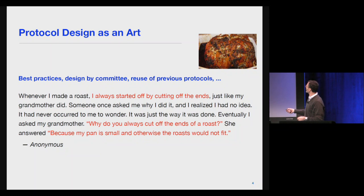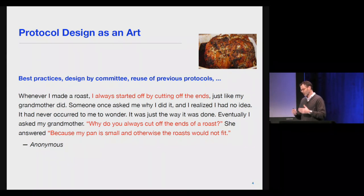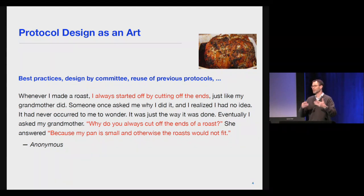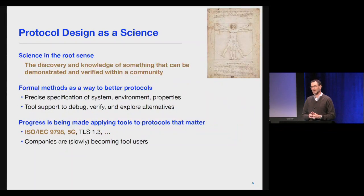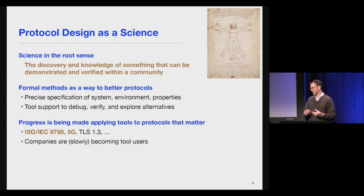The whole thing reminds me of the following story. When I made a roast I always started by cutting off the ends, just like my grandmother did. Someone once asked me why, and I realized I had no idea — it never even occurred to me to wonder. Eventually I asked my grandmother, and she answered: because my pan is small and otherwise the roast wouldn't fit. This is to some extent how protocols are being designed — we have best practices, we carry things out, sometimes we don't even question why. The alternative would be protocol design as a science: discovering and verifying something within a larger community.